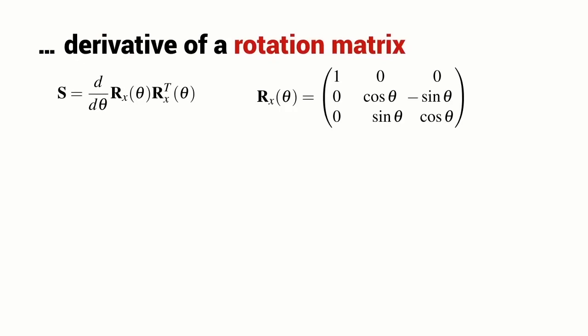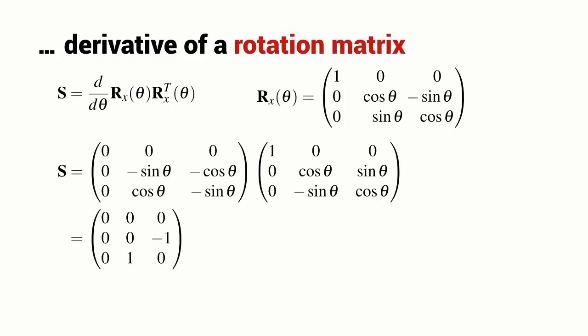Here is our earlier expression for S and I can write down an expression for a matrix which represents rotation about the x-axis by the angle theta. If I substitute these values in and simplify, I end up with a very simple matrix containing a lot of zeros, 1 and a minus 1. Recalling our earlier expression for a skew symmetric matrix, this matrix that I've just written down I can write as a skew symmetric matrix of the vector 1, 0, 0.